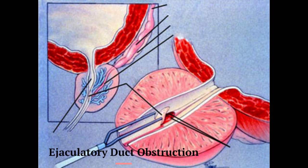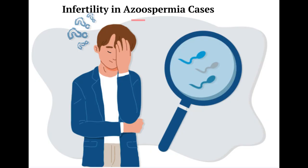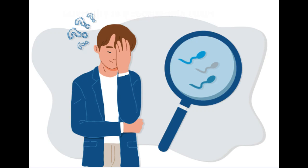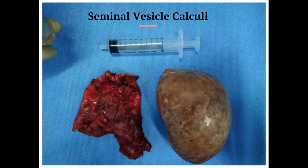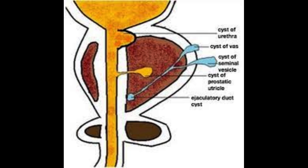Ejaculatory duct obstruction causes infertility in 5% of azoospermia cases. Duct obstruction can result from seminal vesicle calculi, Müllerian duct or Wolffian duct anomalies, diverticula, or cysts.